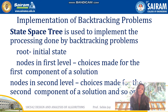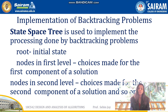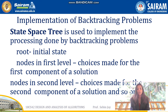To implement backtracking problems we use a state space tree. It is a tree used to represent the processing done by backtracking. It has a root node and several other nodes. The root node indicates the initial state of the problem, and nodes in the first level indicate the choices made for the first component of the solution.